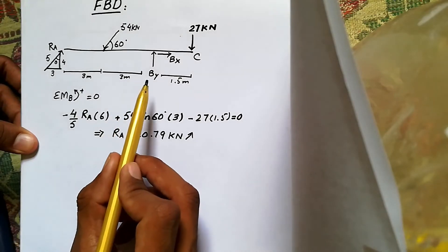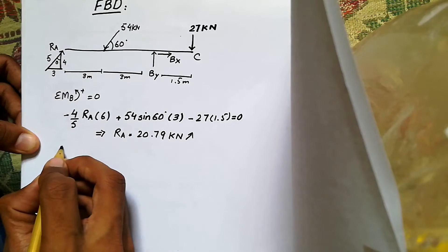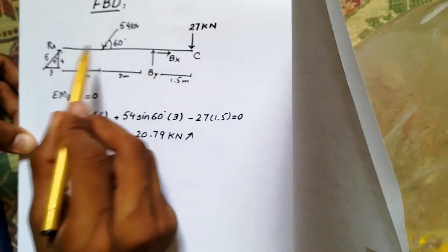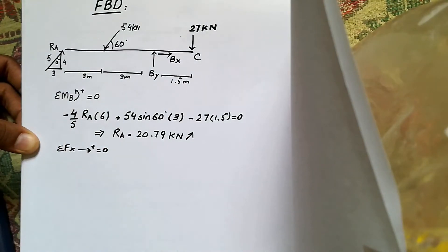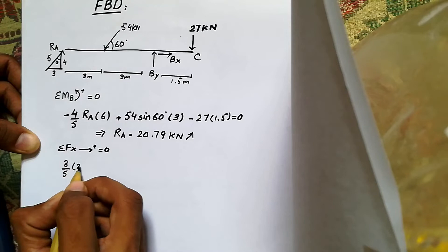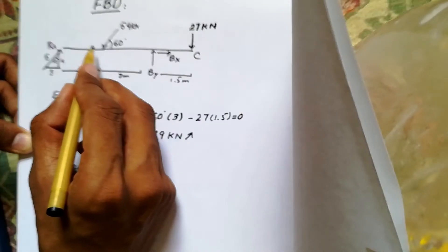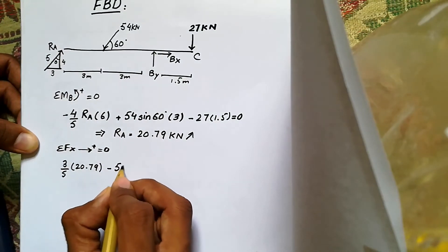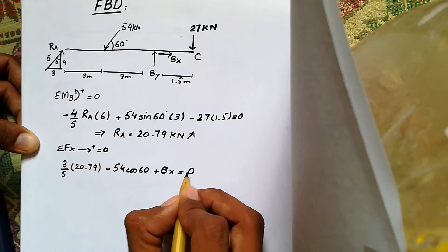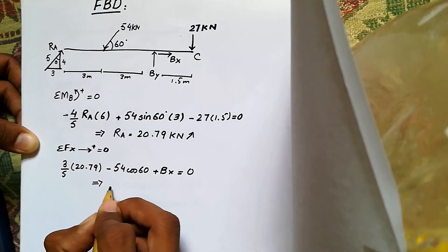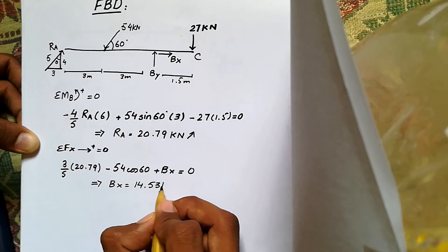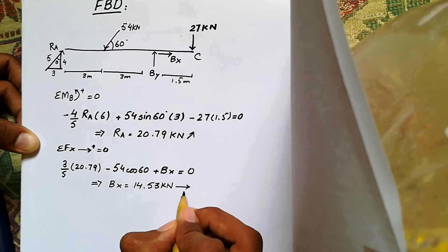Now we are going to find Bx by summation of Fx. We have three forces in the x direction. We get: (3/5) of 20.79 minus 54 cos 60 plus Bx equals zero. Solving this, Bx equals 14.53 kilo Newton.